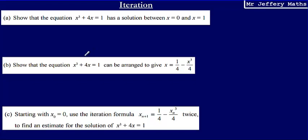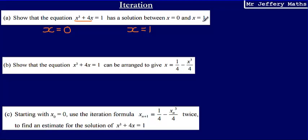There are a couple of ways to do this, but we're going to use a trial and improvement method to show that x must have a solution between 0 and 1. We substitute x equals 0 and x equals 1 into this equation. If there is a solution between 0 and 1, we'd expect one value to give an answer that is too small and the other too big — meaning there must be an answer between those two values.